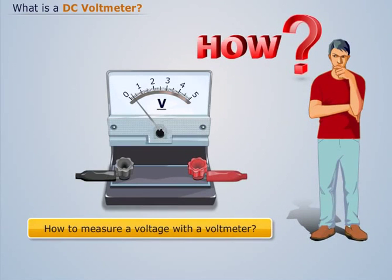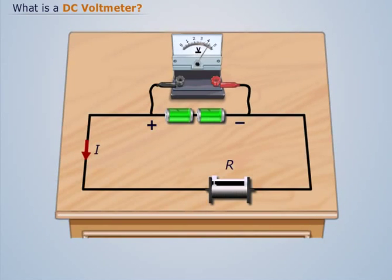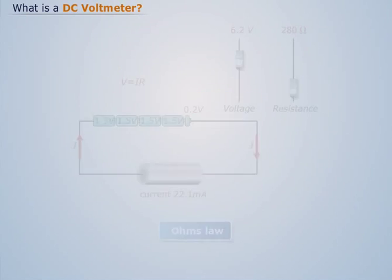The voltmeter is placed in parallel in the circuit. It is needed to take into account the direction of the current. It should be placed across the terminals of an electric element.